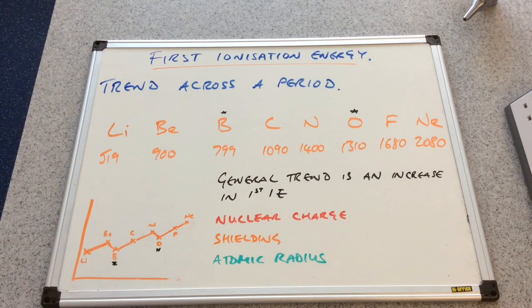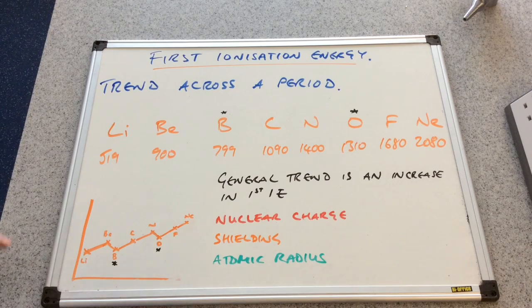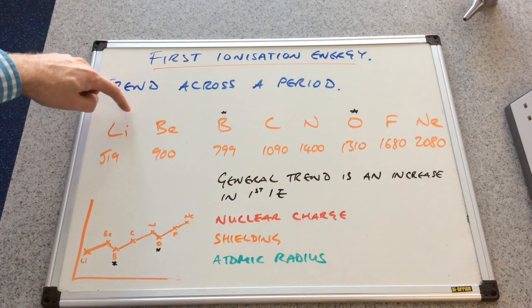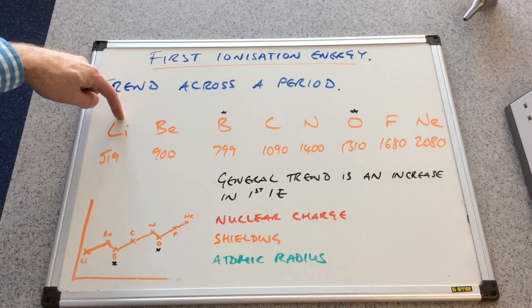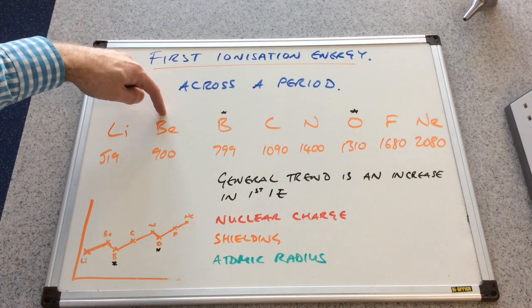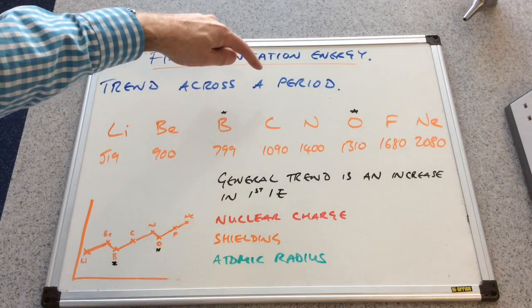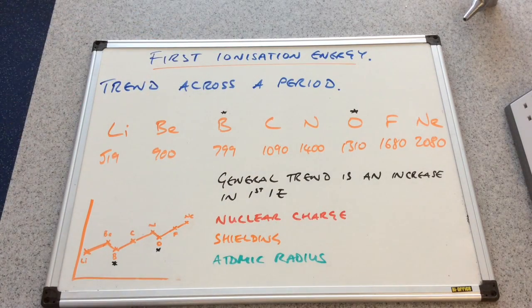We'll look at the nuclear charge first. What's happening to the nuclear charge as we go across a period? Well, lithium's got three protons, beryllium's got four, boron's got five, carbon's got six and so on. So the nuclear charge is increasing.